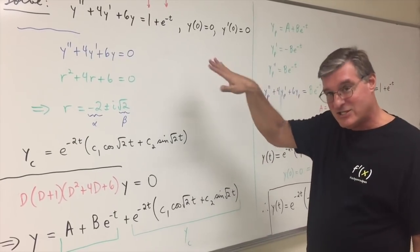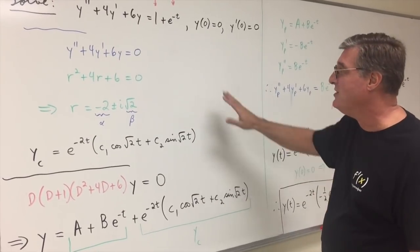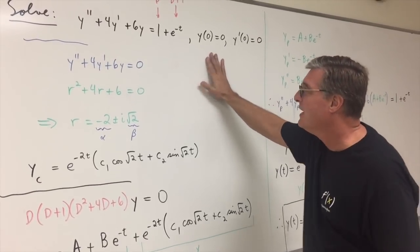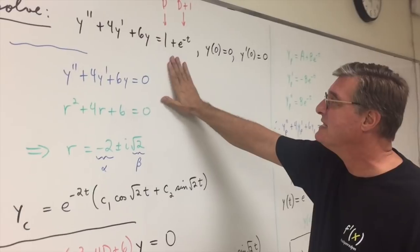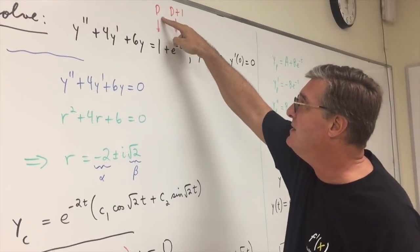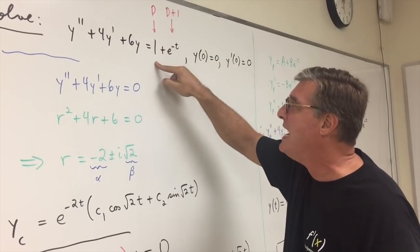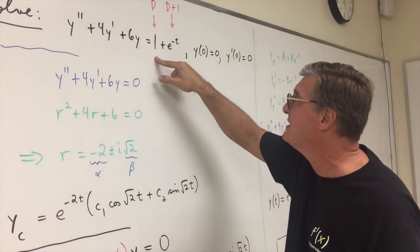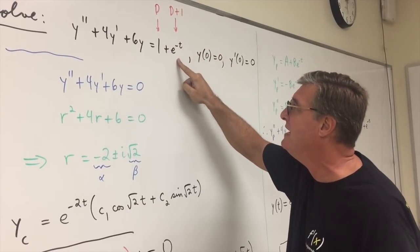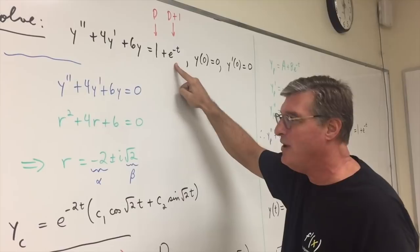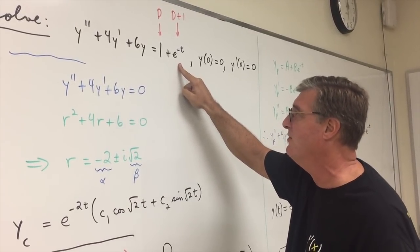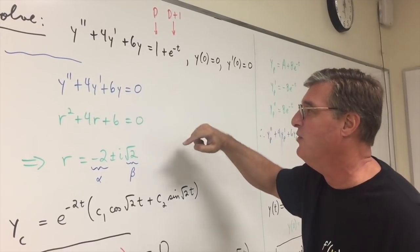Well, anyway, let's take a look at what happens when you use undetermined coefficients on this. Alright, so here's the problem again. Notice it's non-homogeneous. If you're working with differential operators, you know that the differential operator d is going to annihilate the constant one, and then the differential operator d plus one is going to annihilate e to the minus t. Although, in this particular case, I think you can see what the form of the particular function is going to be for your final answer.